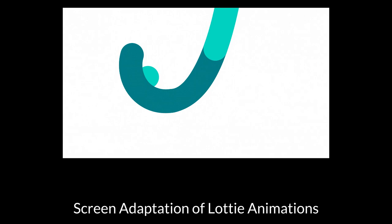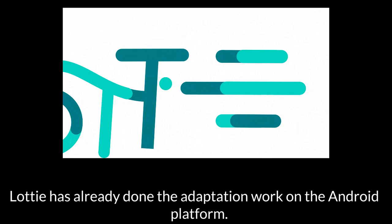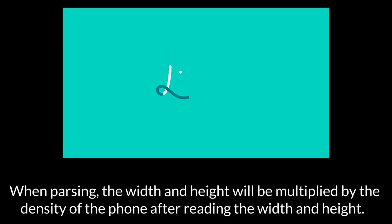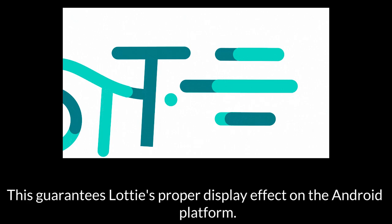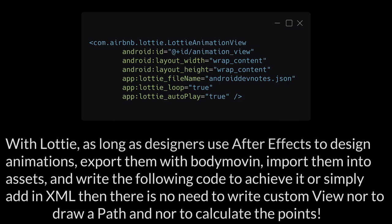Regarding screen adaptation of Lottie animations: Lottie has already done the adaptation work on the Android platform. When parsing, the width and height will be multiplied by the density of the phone after reading them. When using it, it decides whether the adapted width and height exceed the width and height of the screen, and if they do, it zooms. This guarantees Lottie's proper display effect on the Android platform. Lottie converts all PX values to DP. Designers use After Effects to design animations, export them with Bodymovin, import them into assets, and write just a few lines of code — or simply add in XML — with no need to write custom views, draw paths, or calculate points.